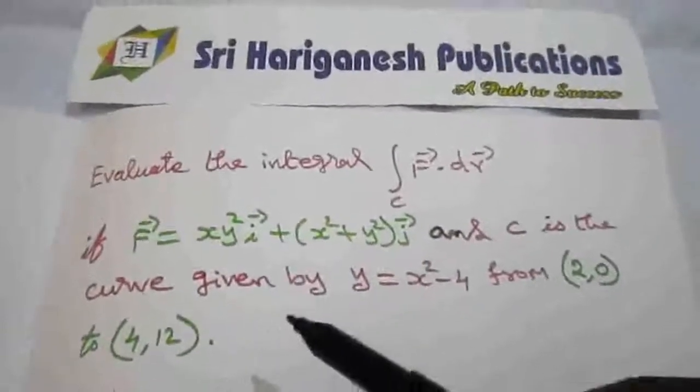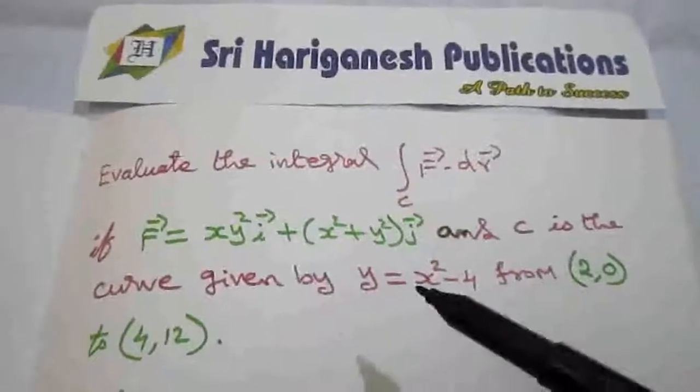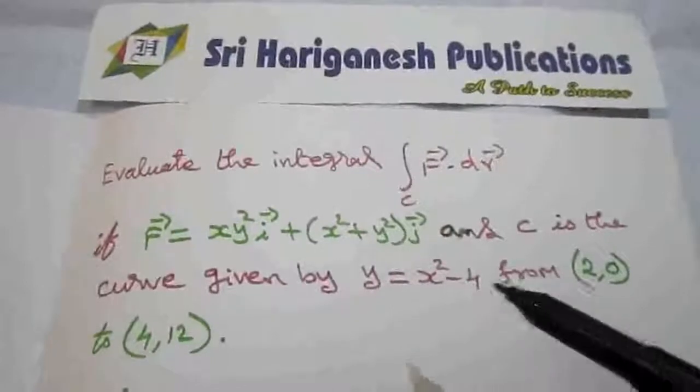So we have to evaluate the integral for the given function f vector over the curve y = x² - 4 from the two points. Now this is a line integral.